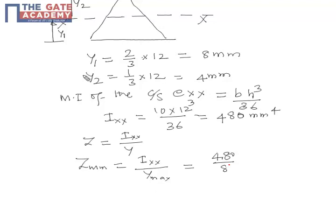Of y1 and y2, y1 is greater than y2, so we take ymax as 8. So the section modulus is 60 mm³, and therefore the minimum is 60 mm³.